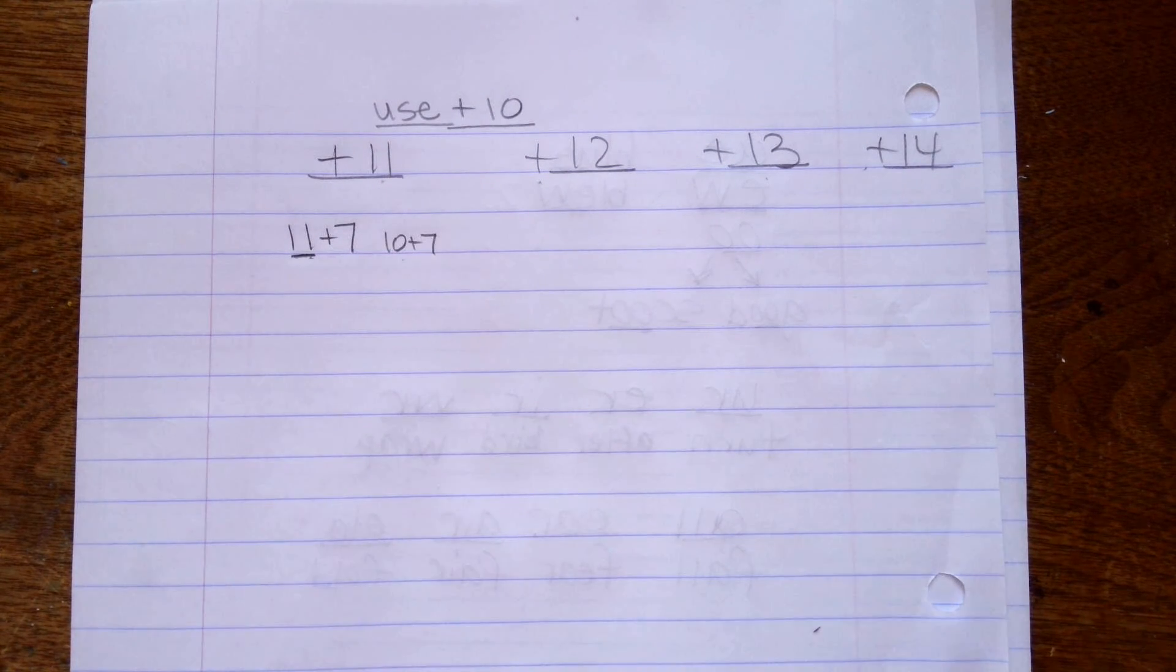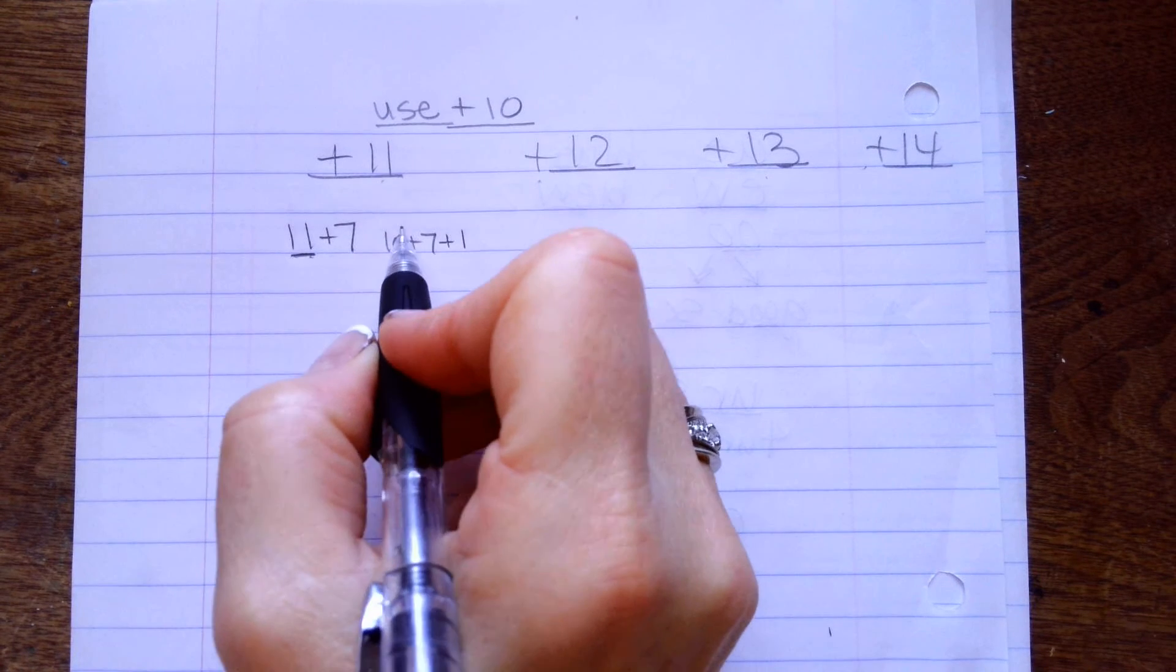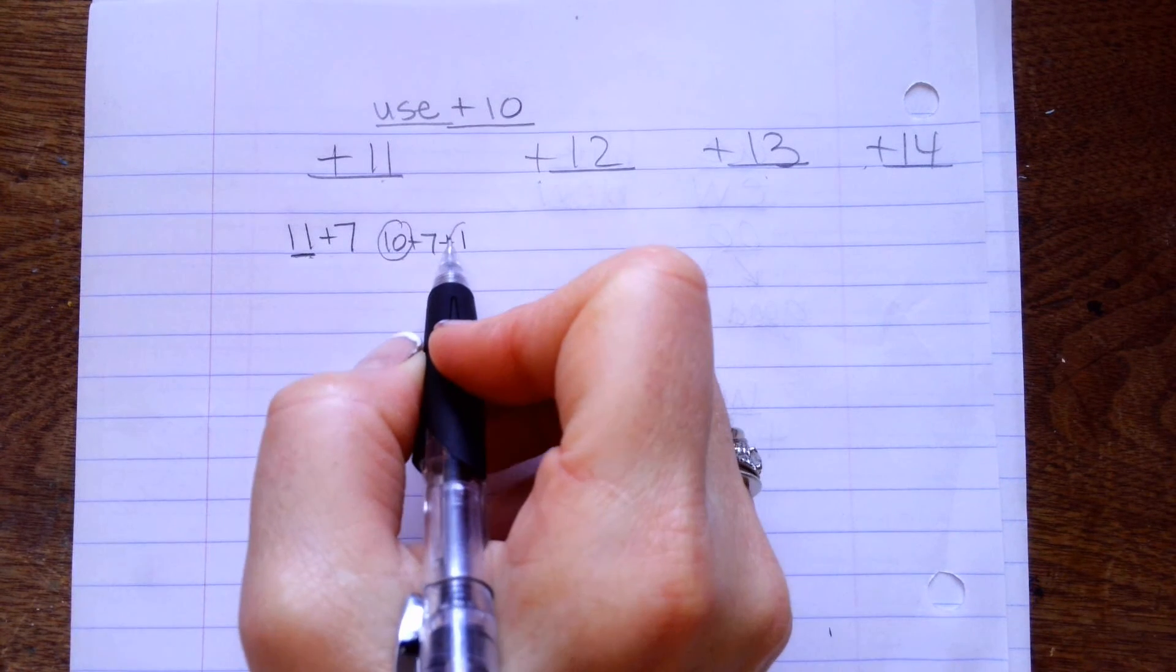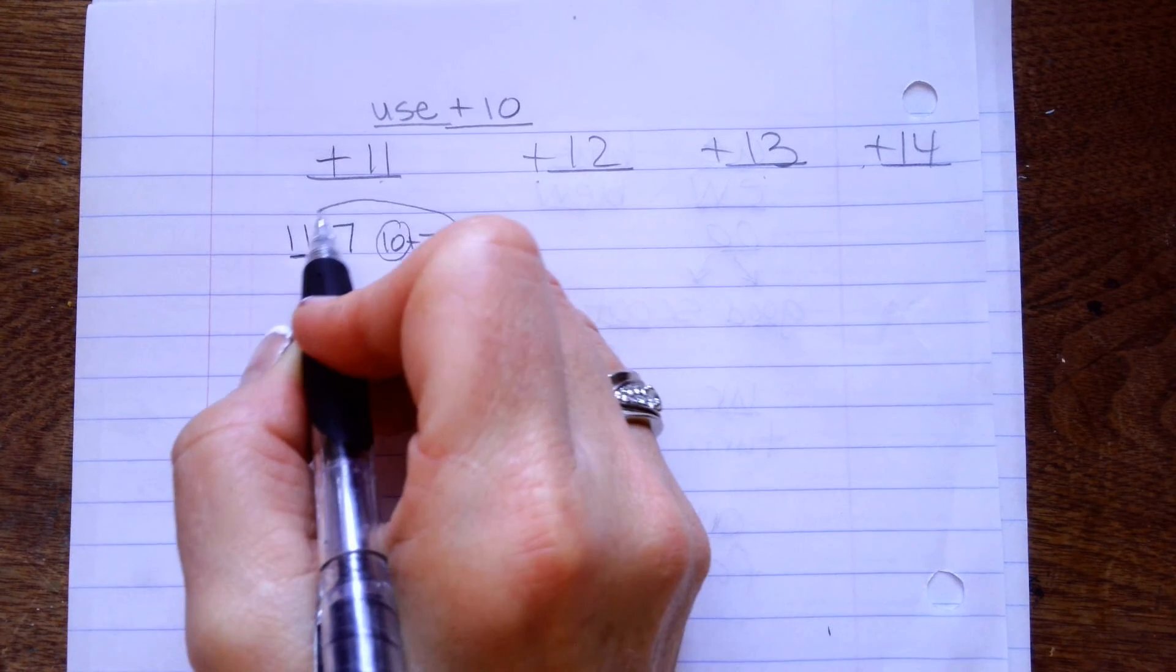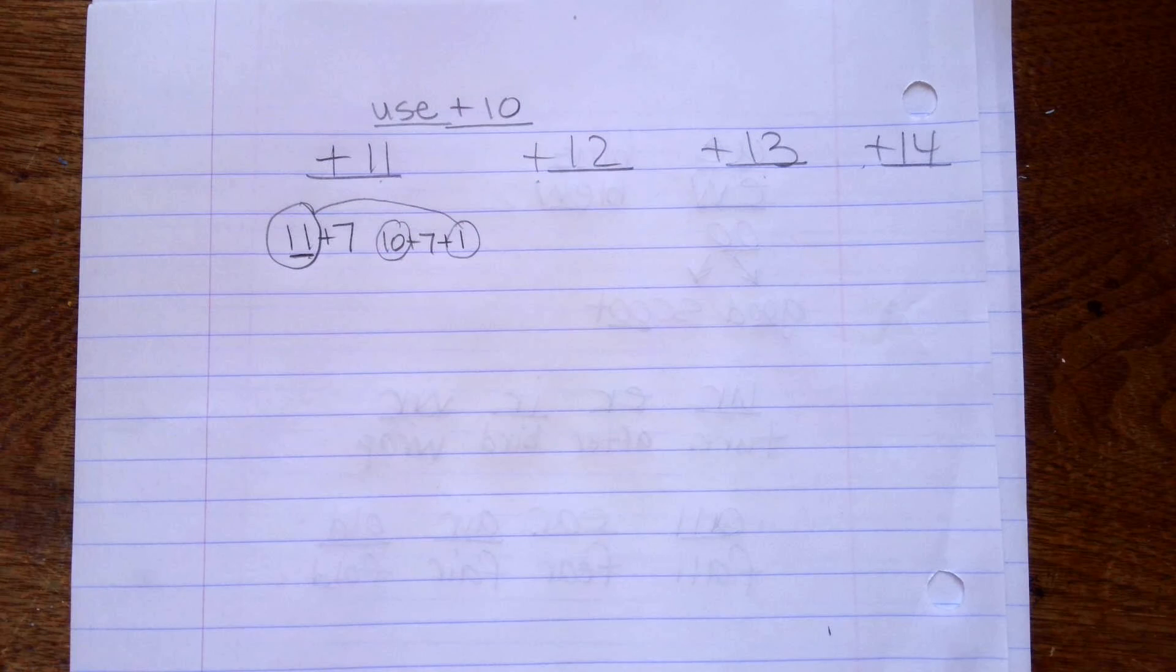But, I don't have 10 plus 7 here. I have 11 plus 7. So, I have to add the 1 to the back and these two numbers right here make up my 11.